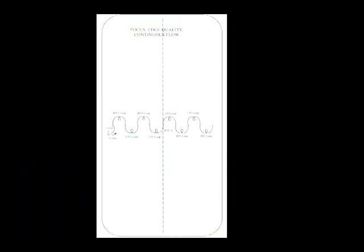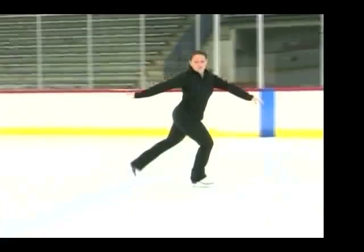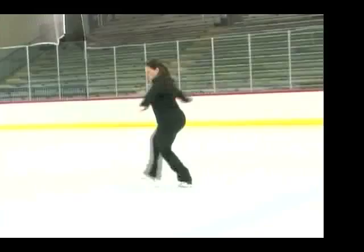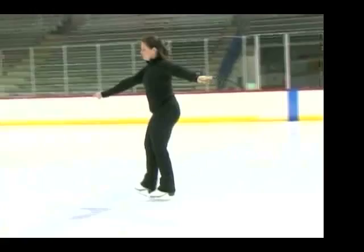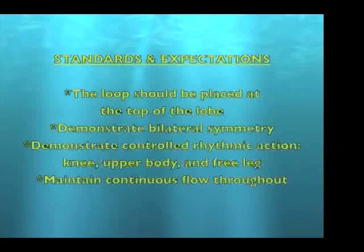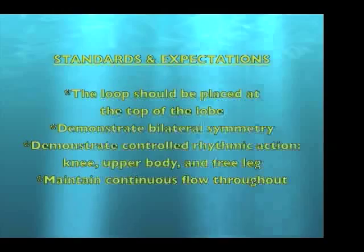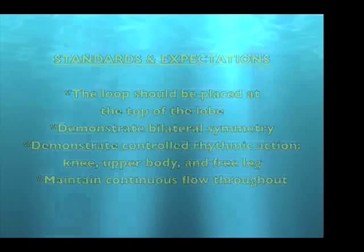Focuses of this move are edge quality and continuous flow. The loop should be placed at the top of the lobe. Demonstrate bilateral symmetry. Demonstrate controlled rhythmic action with knee, upper body, and free leg. And maintain continuous flow throughout.